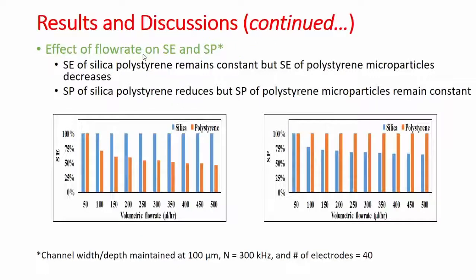We looked at the performance metrics of the device across two different parameters, starting with flow rate. The separation efficiency of silica particles remains the same irrespective of flow rate because you only need to levitate the silica microparticles. On the other hand, the polystyrene particles need to be attracted to the electrodes, and as flow rate increases, there is not enough time for the electrodes to attract the polystyrene to their surface. So the separation efficiency for polystyrene reduces, and as a result, they appear at the silica outlet, causing the separation purity of silica particles to drop.